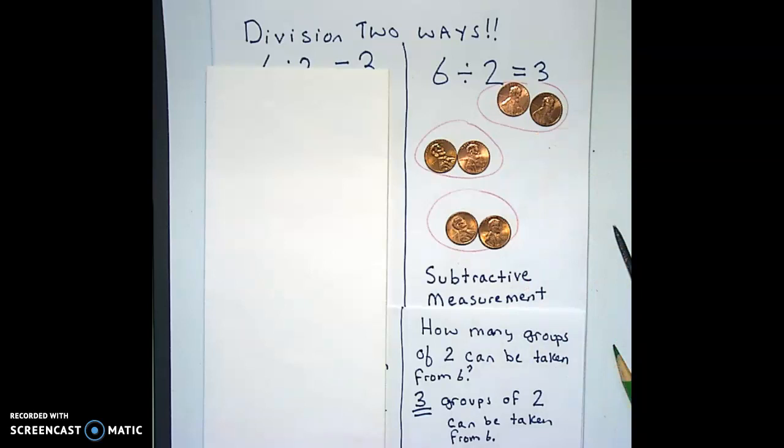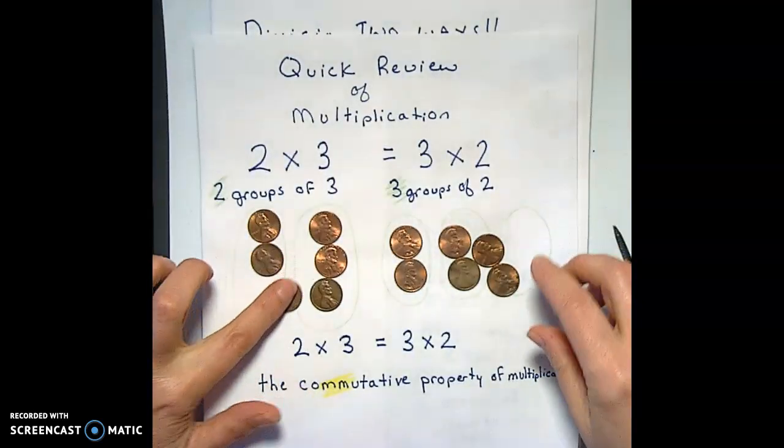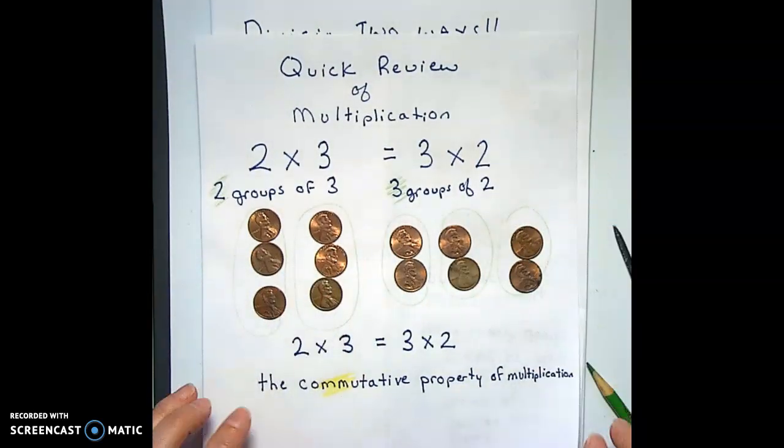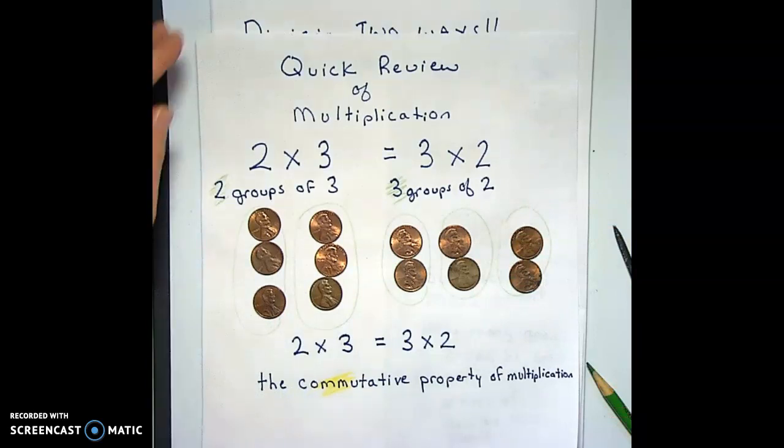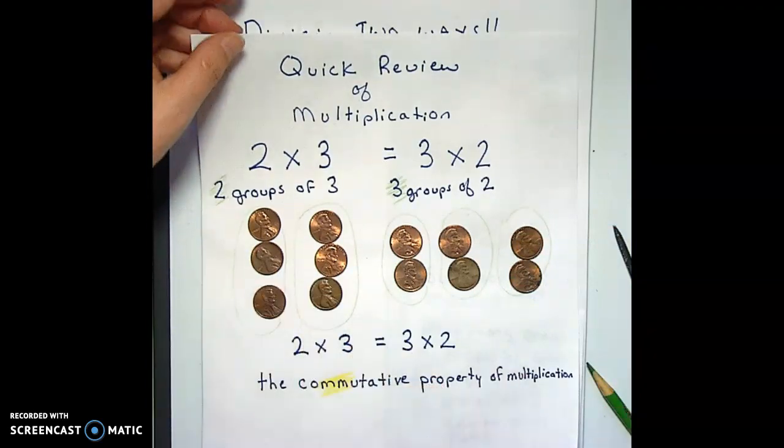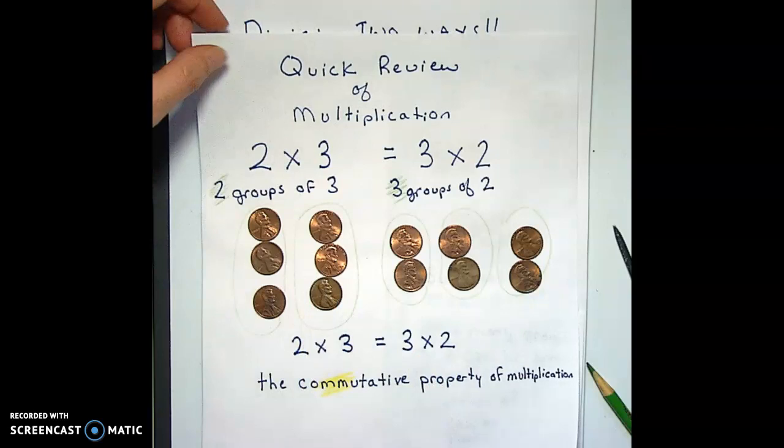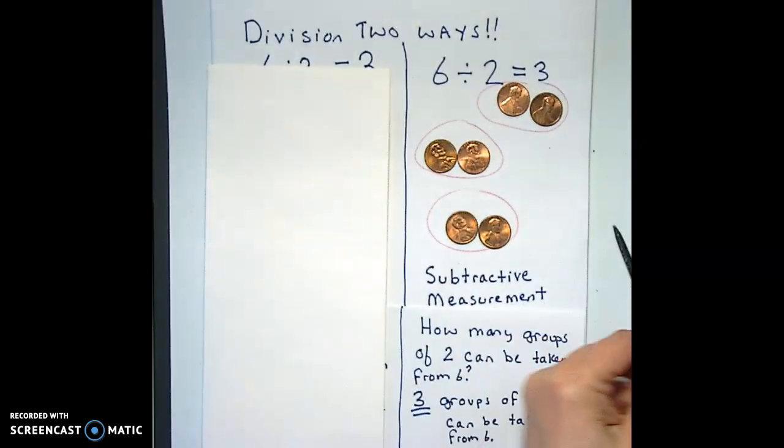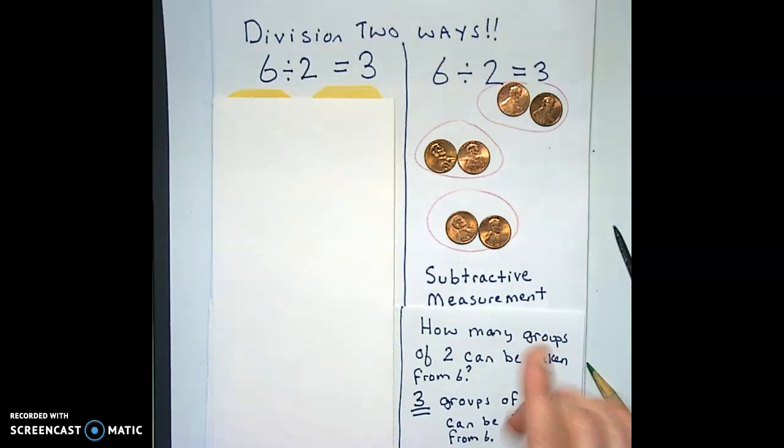And this will be really important as we move into the fractions. And also you might want to recognize the correlation between this and the one we did a little bit ago, the difference between the commutative property with multiplication. So whether it's two groups of three or three groups of two, here it's kind of the same problem, and here it's different ways of looking at a division problem. So the commutative property and the two different ways of looking at division are very closely related.